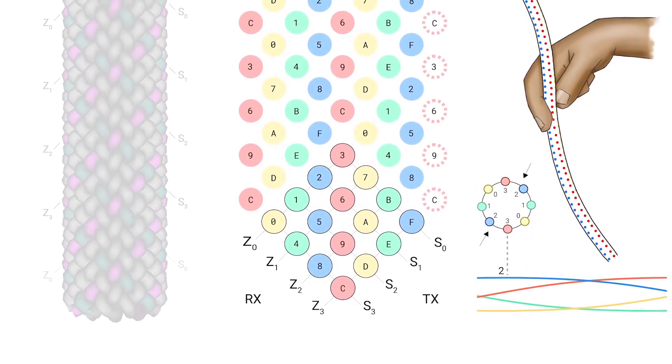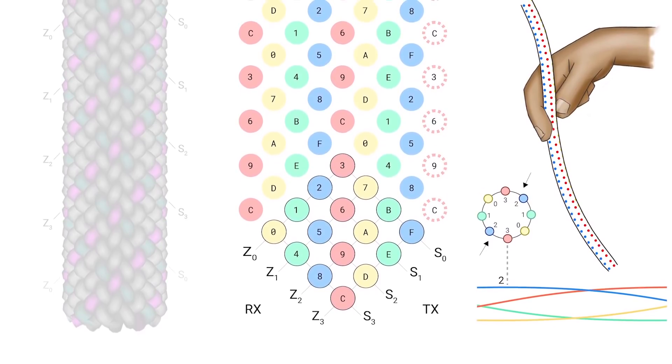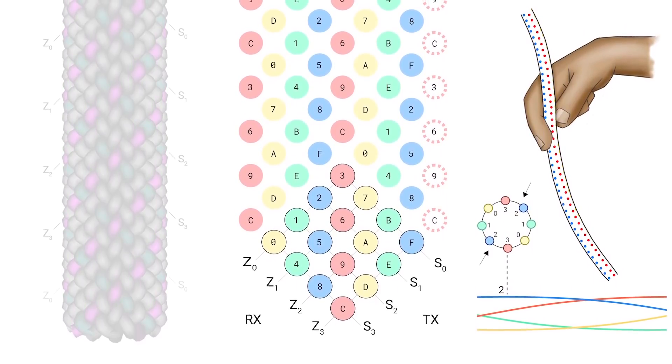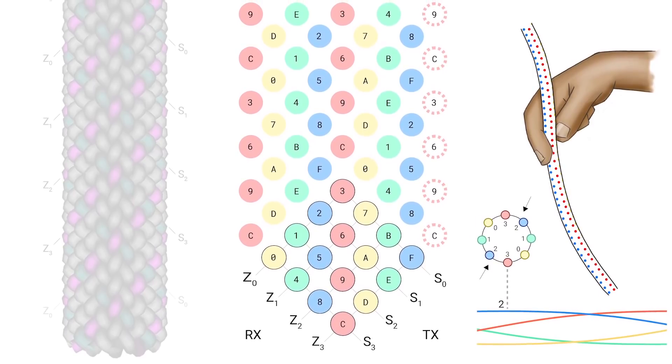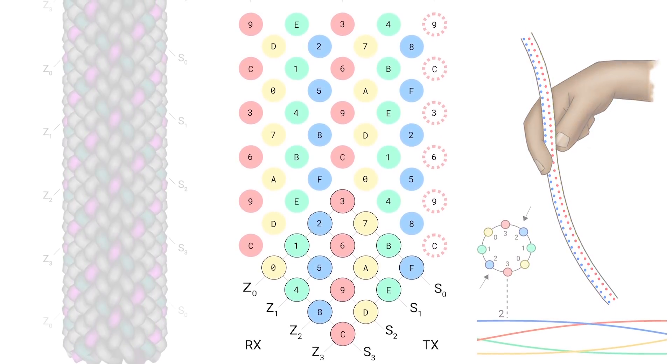The center shows a flattened helical sensing matrix that illustrates the resulting infinite number of 4x4 matrices which repeat along the length of the cord.